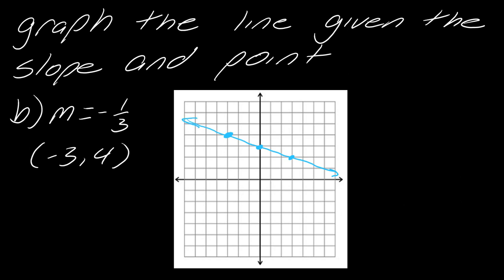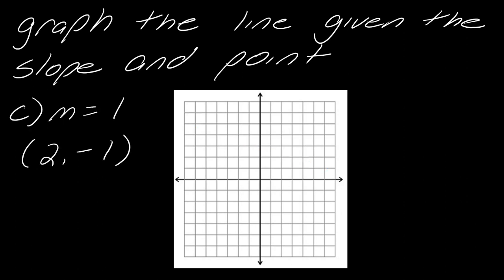Pause the video here — if you've got the guided notes, do the next two examples. Otherwise pause, give it a try, and hit play when you're ready. For this one, I start by graphing the point two, negative one. My slope is one, which is really one over one, so I go up one and to the right one — I do that twice and connect the points.